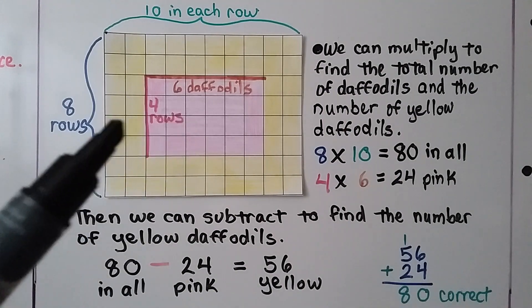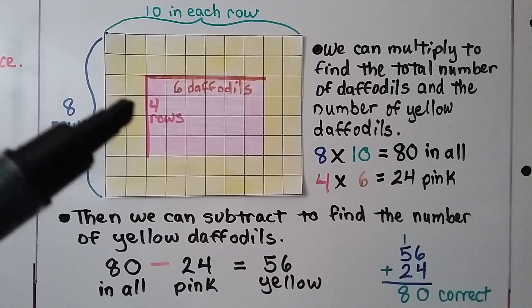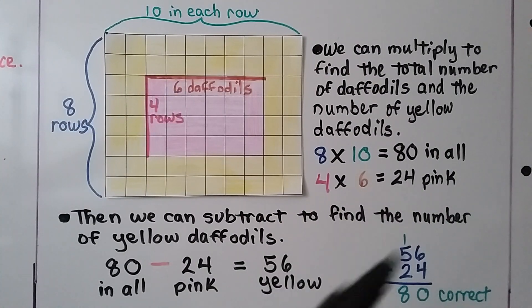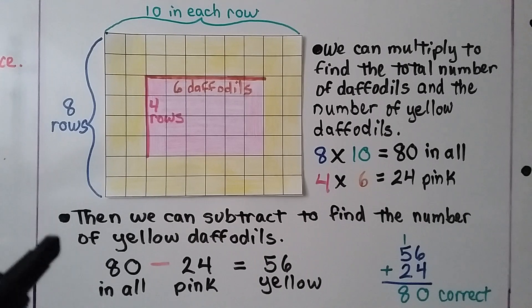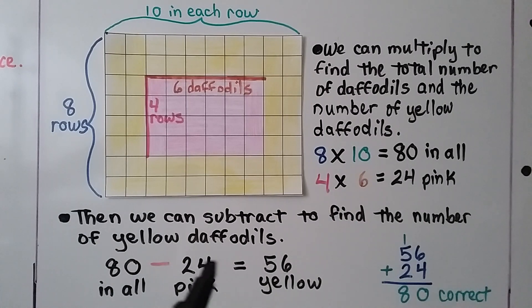Now we need to find the number of yellow ones. So we find the number of pink ones: four times six, which is 24 pink. Then we subtract to find the number of yellow daffodils. There are 80 in all minus the 24 pink ones — we have 56 yellow daffodils. We can use an inverse operation to check: 56 plus 24 is equal to 80, so we did our math correctly.